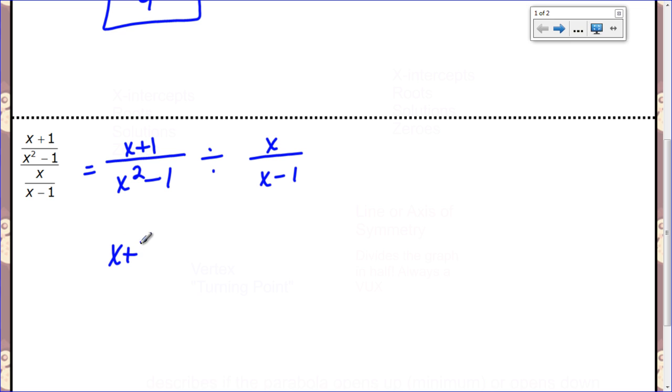Well now we have to factor if we can. So x plus one, nope, that can't be factored. x squared minus one, yes, that's a difference of two squares. So it becomes x plus one and x minus one. This one x can't be factored, neither can x minus one. So I can jump straight to change to multiply and flip.